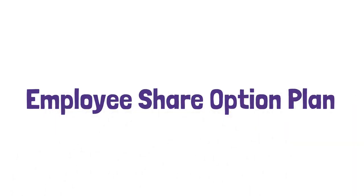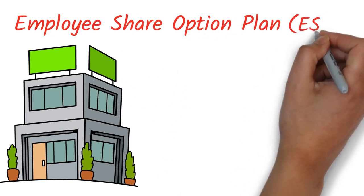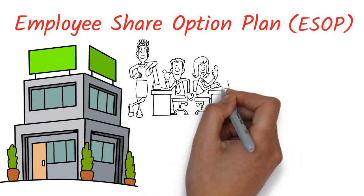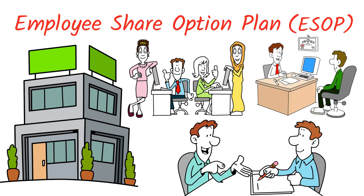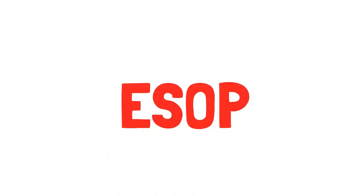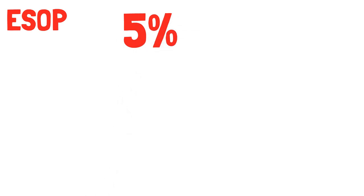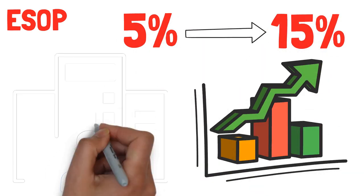Employee Share Option Plan. Many startups establish an Employee Share Option Plan, or ESOP, as a way of incentivizing employees, advisors, and consultants to assist them. The ESOP pool typically ranges from 5% to 15% of the total issued share capital of your company.